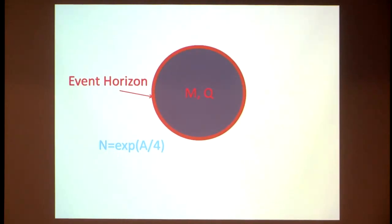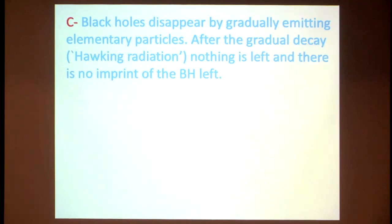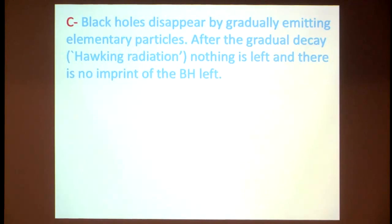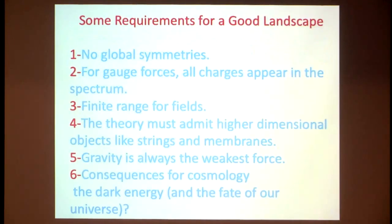The number of states of a black hole is exponential of the area of the event horizon divided by 4 — a simple formula. Black holes also disappear by gradually emitting elementary particles — this is Hawking radiation. Even though we originally thought nothing can escape a black hole, Hawking showed that quantum effects allow black holes to gradually lose their mass by emitting radiation. After a while they completely disappear, with no imprint left.